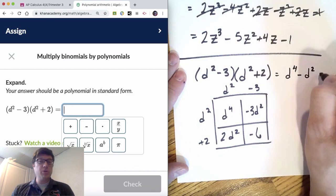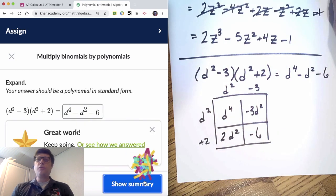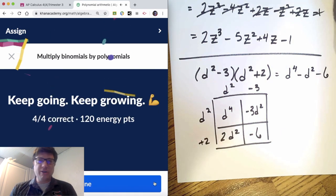If you don't have an exponent, you leave it alone. We say it is that letter times that number. Anyway, d to the fourth minus d squared minus 6, final answer.